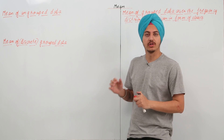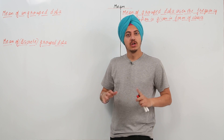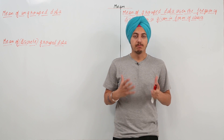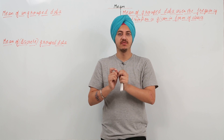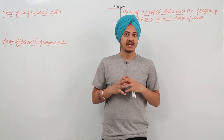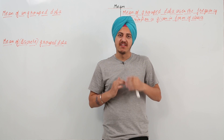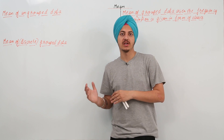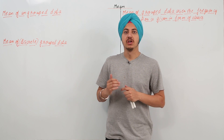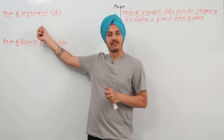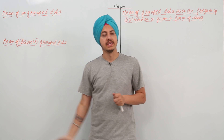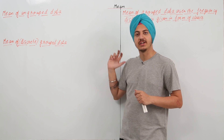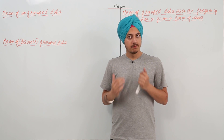We are moving on to the topic of mean. Mean is the central value of a data — that means the average value. If we have a few numbers and we need to calculate the average, the technical term for that is called the mean. There are different types of data and for all those kinds of data, we have different types of formulas to calculate mean.